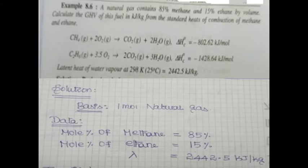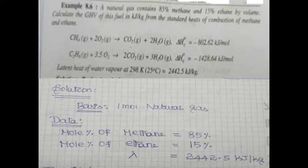Natural gas contains 85% methane and 15% ethane by volume. Calculate the GHV of this fuel in kilojoule per kg from the standard heat of combustion of methane and ethane. CH4 + 2O2 → CO2 + 2H2O, standard heat of combustion = −802.62 kJ/mol. C2H6 + 3.5O2 → 2CO2 + 3H2O, standard heat of combustion = −1428.64 kJ/mol.